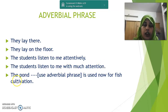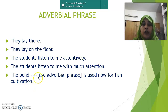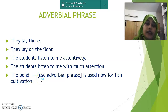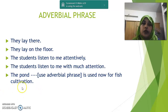Next: 'The pond — dash — is used now for fish cultivation.' You can write 'behind our house' or 'in front of our house.' If you ask: where is the pond? The answer is 'behind our house.' So it is an adverbial phrase.